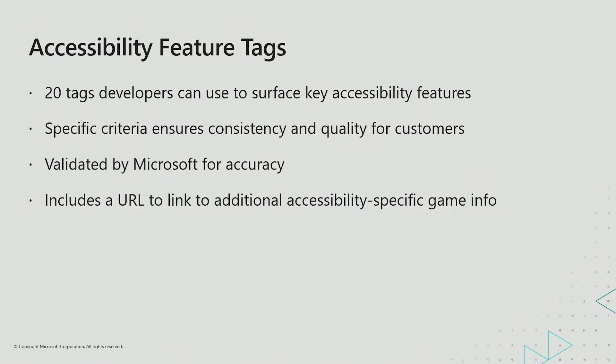Additionally, to ensure accuracy of the applied tags, Microsoft validates information after it has been published. Should any discrepancies be found, publishers are notified and asked to correct their tagging. We understand that these 20 tags only cover a fraction of all the possible accessibility features and functionality a game might have. That's why we now provide an ability for game developers to list a URL to an accessibility-specific page for their games. This URL can be launched directly from the Xbox Store, as well as the Xbox.com website, and it's a fantastic way for developers to communicate all the incredible accessibility work they're doing in their titles.